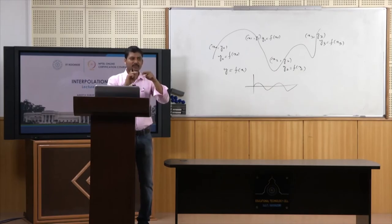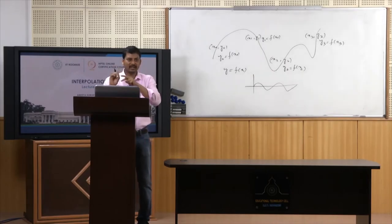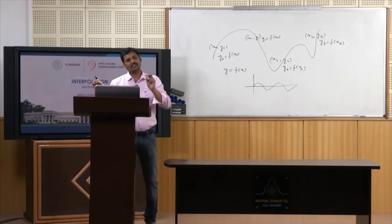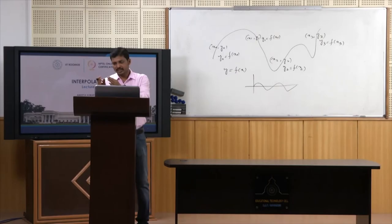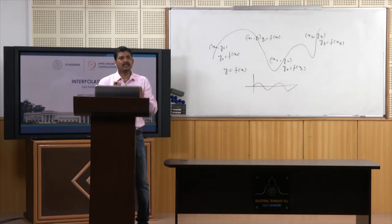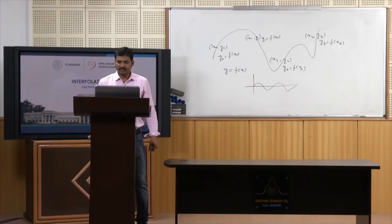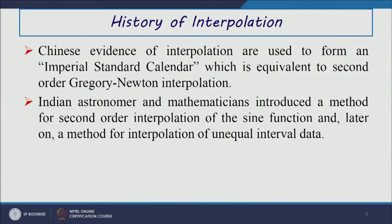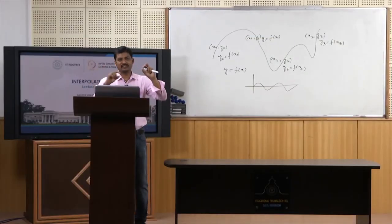Gregory-Newton interpolation means it can start from the beginning of the table or from the end of the table to compute data throughout the whole table. Indian astronomers and mathematicians also introduced second-order interpolation of the sine function. Later, Brahma Gupta introduced a method for interpolation with unequal interval data, using sine and cosine functions for second-order interpolation to visualize the structural motion of the moon and sun in space.